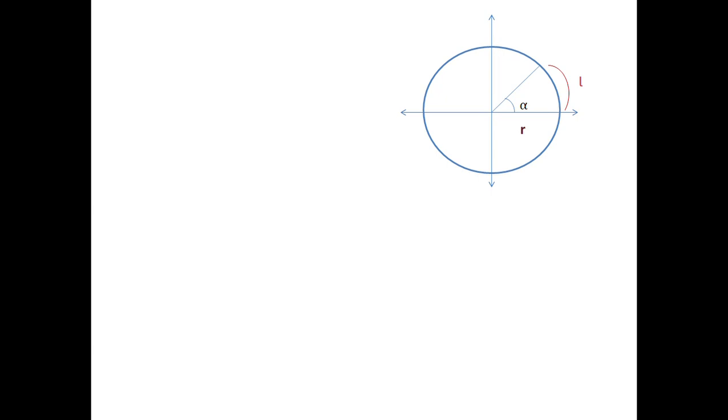So for that let us consider this Cartesian plane and this circle of radius r. Here we can observe when angle α is subtended such that it is forming one arc of length L.